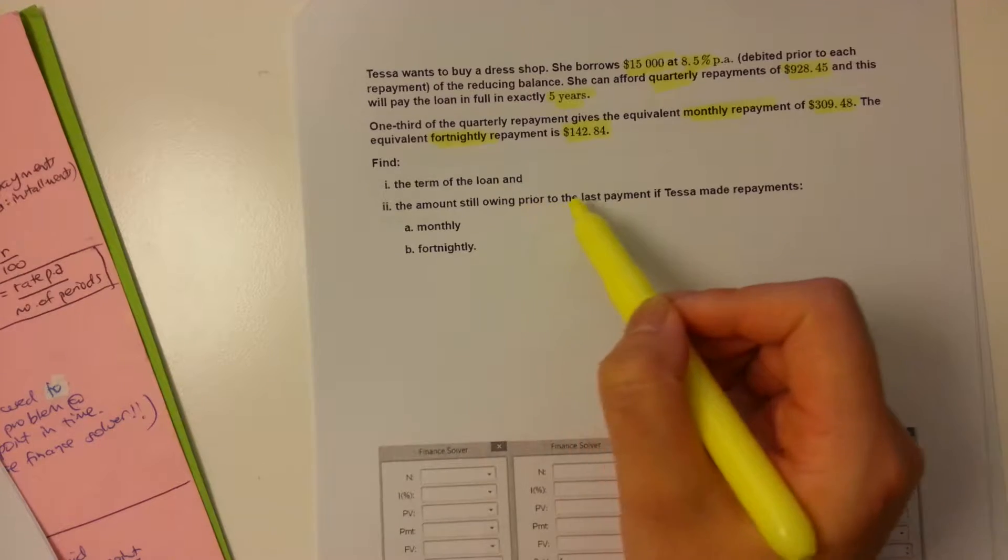Now, as for the second part, how much do we still owe before, so prior to the last repayment? Well, our last repayment would be the 129th repayment. The payment before that would be 128. So, we're going to set our N to 128. Everything else stays the same. You'll be doing this on your calculator, obviously. There's no need to manually input it. I'm just showing you what to do here. 26, 26. And we're going to hit Enter in future value, because we want to see how much we still owe after making 128 full repayments of the amount specified.